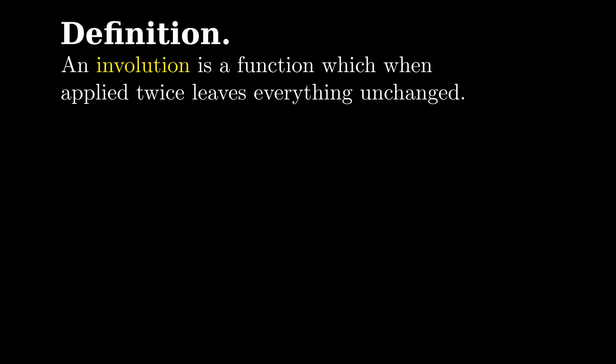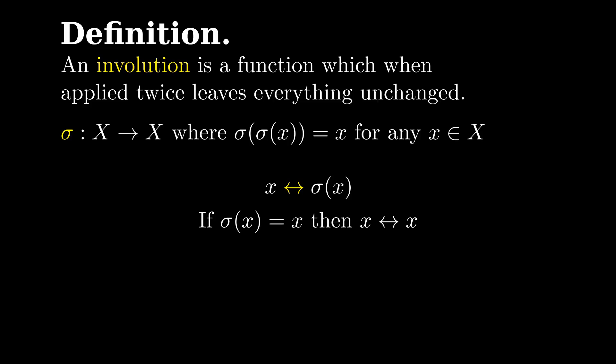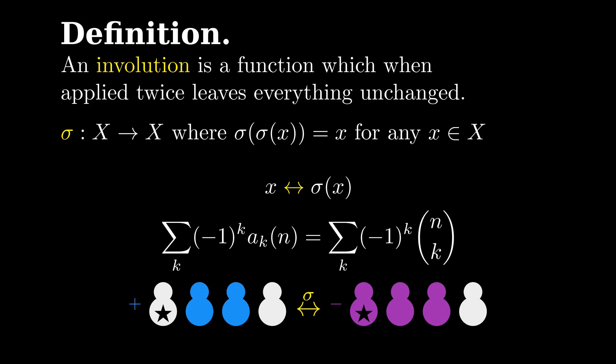You all know that a math video isn't officially classified as a math video without at least a quick definition. So here's today's. An involution is a function which, when applied twice, leaves everything unchanged. If we were inclined to use jargon, we'd say it's a function sigma that maps a set to itself where sigma of sigma of x is x for any input x in big X. Essentially it matches x with sigma of x. This is great except that sometimes sigma may fix some inputs. So as defined, x can match with itself, which will turn out to not be a big problem for us. That's because we're interested in alternating sums where we want a parity reversing involution. Parity reversing means that the involution pairs a plus one case with a minus one. Think back to our last example, where our involution toggled the star's presence in a given subset. The size of the subset changed parity when we applied the involution. When we have a parity reversing involution, we don't have to worry about anything being matched to itself. Nothing can have both parities.